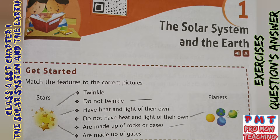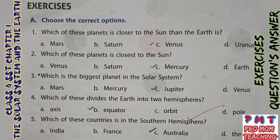Match the features to the correct pictures. 'Twinkle' — match it with stars. 'Do not twinkle' — match it with planets. 'Have heat and light of their own' — match it with stars. 'Do not have heat and light of their own' — match it with planets. 'Are made up of rocks or gases' — match it with planets. 'Are made up of gases' — match it with stars.